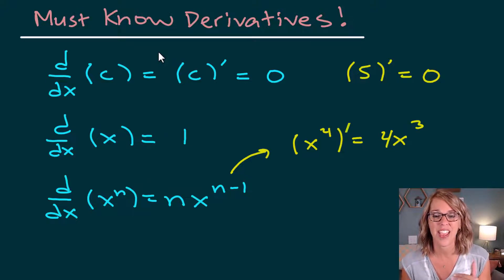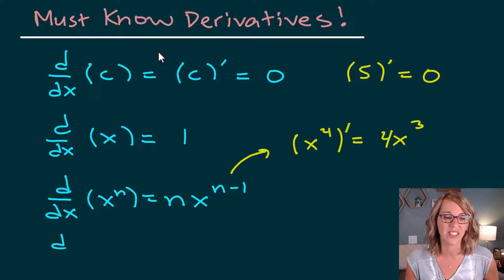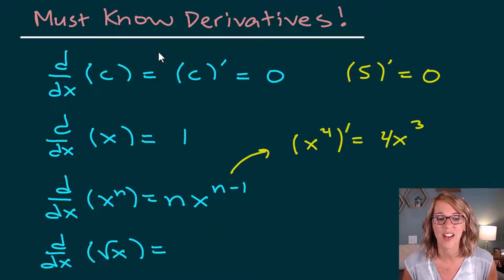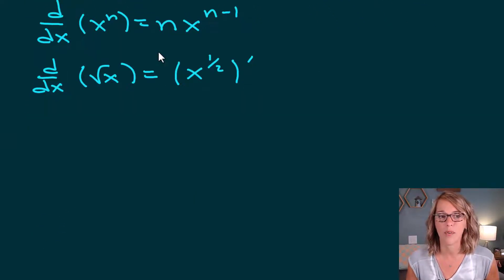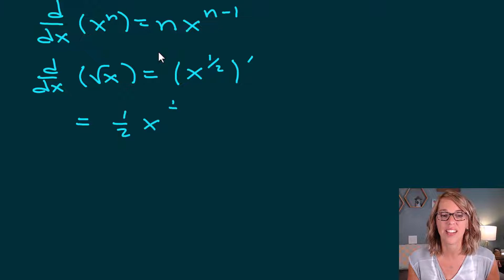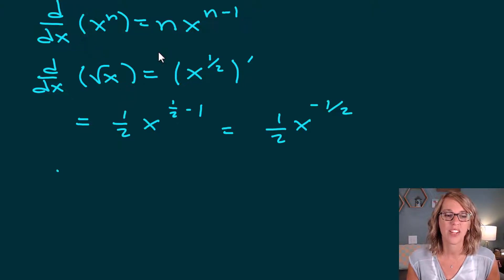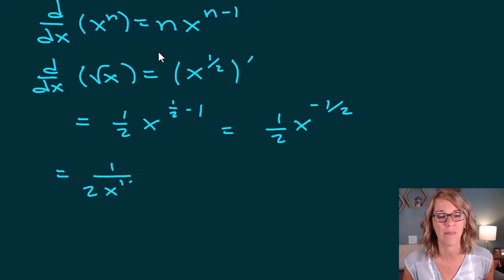Next, we've got the derivative of a radical. So d/dx of the square root of x — I'm going to use the power rule on this one as well. I'll rewrite this using prime notation as x to the one-half power. Applying the power rule, I bring the one-half out in front and get x to the one-half minus one. That gives one-half x to the negative one-half, which I can rewrite as one over two radical x.